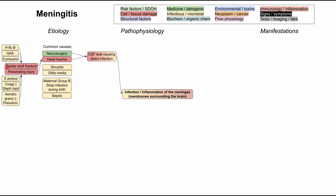For instance, if we have a basilar skull fracture, the bug is more likely to be Haemophilus influenzae type B, group A strep, or Strep pneumo. This is in contrast with a penetrating injury, which is more likely to be Staph aureus, a coagulase-negative staph like Staph epidermidis, or an aerobic gram-negative bacteria which includes Pseudomonas. So penetrating injuries are Staph aureus, Staph epidermidis, or Pseudomonas, whereas basilar skull fractures are more likely to be H. flu, group A strep, or Strep pneumo.